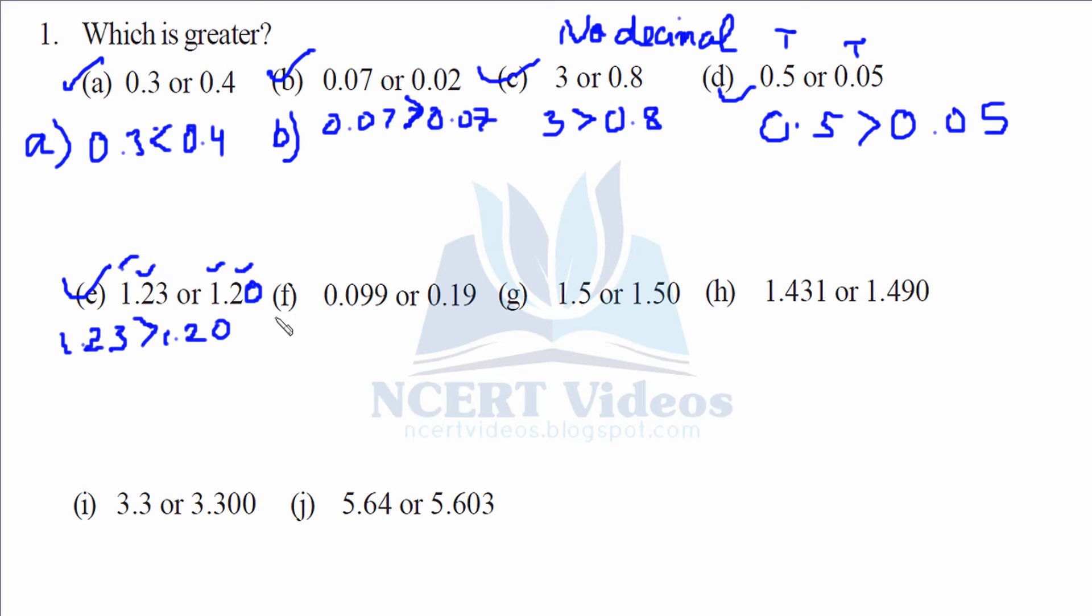Part f: here, what we have in the tenths part? Compare the tenths part. Here it is 0, the other side is 1. Therefore 0.099 is less than 0.19.